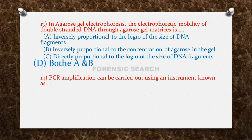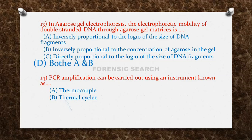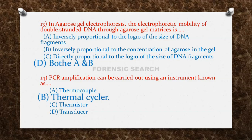The next question: PCR amplification can be carried out using an instrument known as — Option A: thermocouple. Option B: thermal cycler. Option C: thermistor. Option D: translucent. The correct answer is option B — thermal cycler.